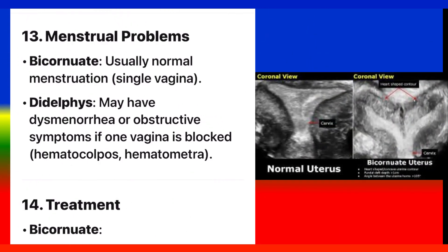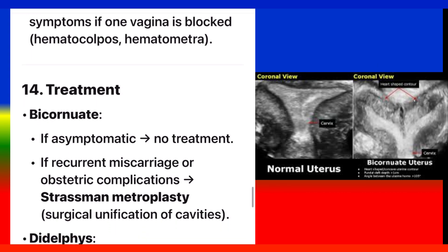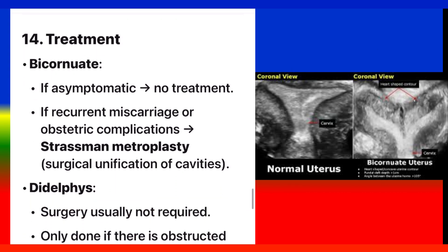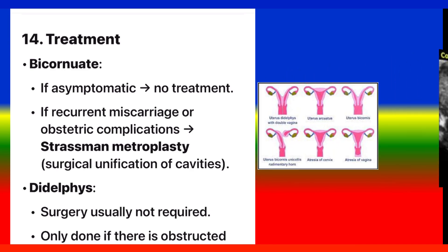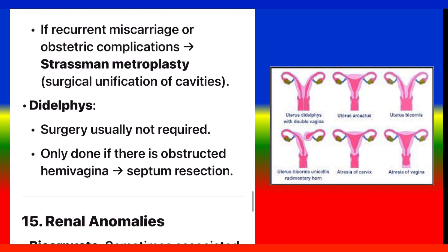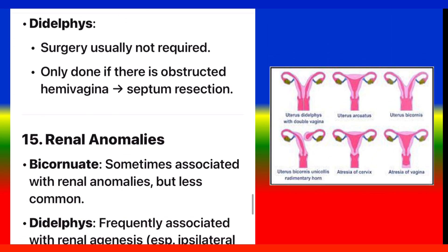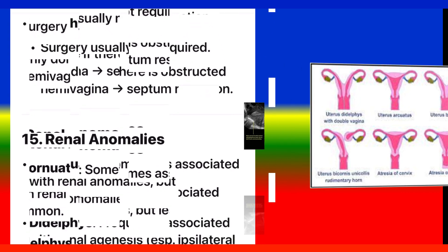Point 14: Treatment. Bicornuate: if asymptomatic, no treatment required. If recurrent miscarriage or obstetric complications arise, Strassman metroplasty — surgical unification of cavities — is performed. Didelphys: surgery is usually not required; it is only done if there is an obstructed hemivagina, in which case septum resection is performed.